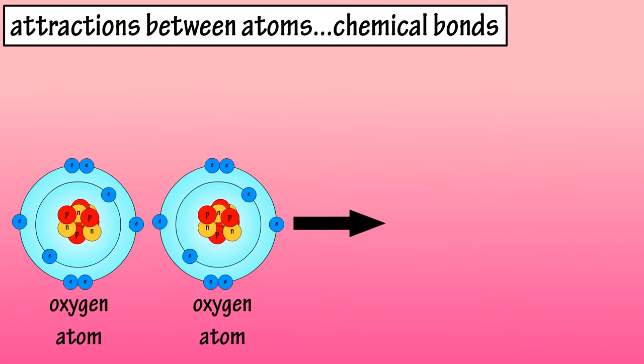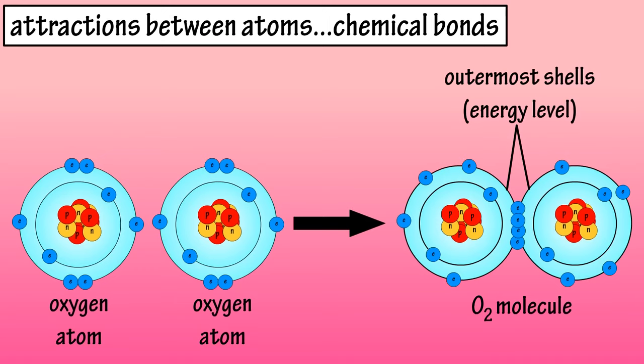Chemical bonds. The interactions of two or more atoms mainly occur at the outermost shell or energy level. The consequence of these interactions results in a chemical reaction.